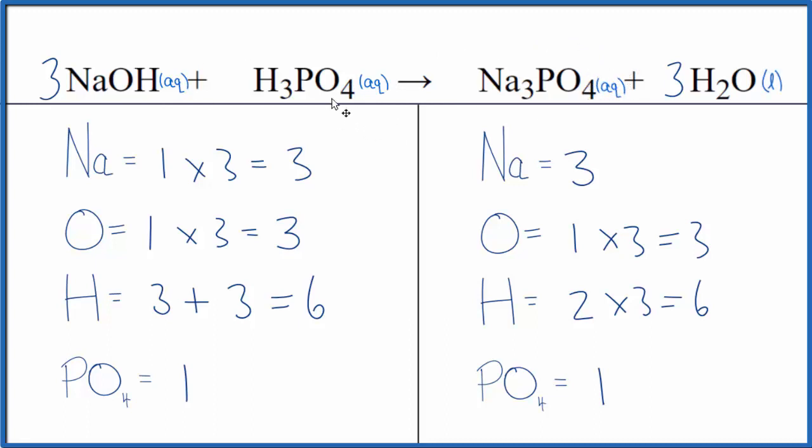So those are the states for the neutralization reaction here. This is Dr. B with the balanced equation for NaOH plus H3PO4, sodium hydroxide plus phosphoric acid, the type of reaction, neutralization, and it is also a double displacement. Thanks for watching.